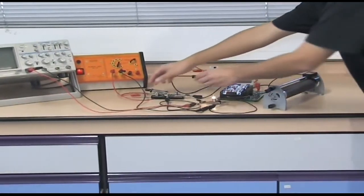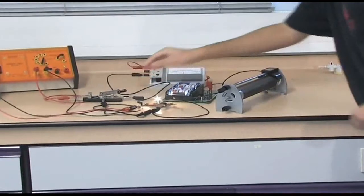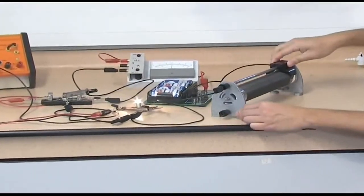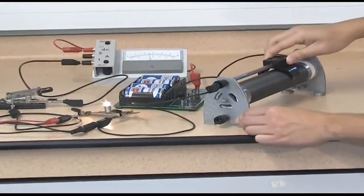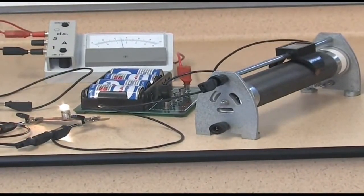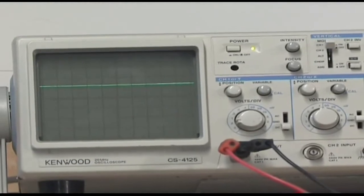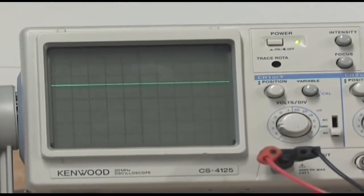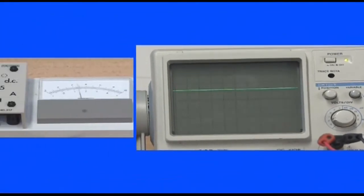Set the switch to the DC power supply. Adjust the resistance of the rheostat so that the light bulb gives the same brightness as connected to the AC power supply. Read the DC voltage from the CRO and the direct current from the ammeter.